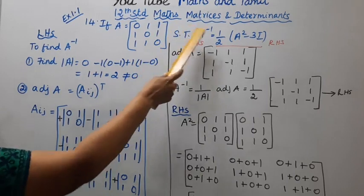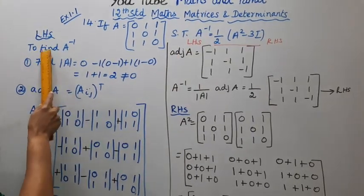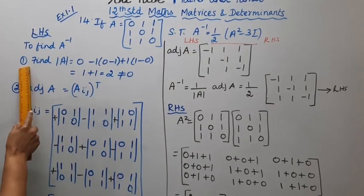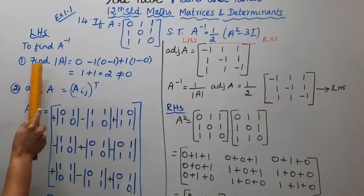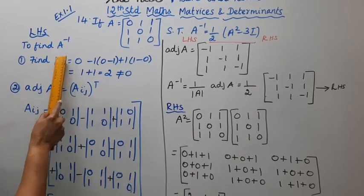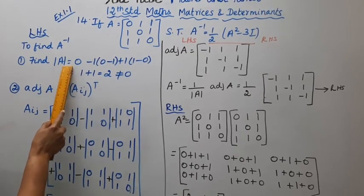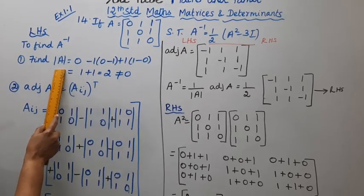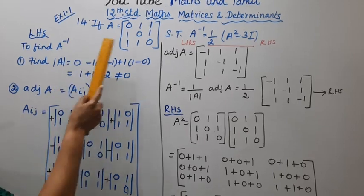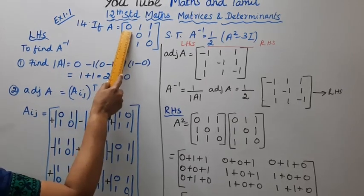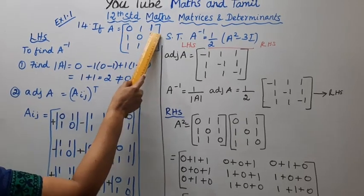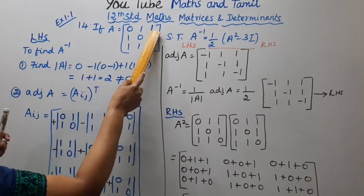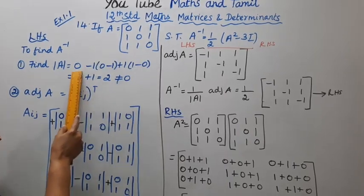First, to find the left hand side, we find A inverse. To find A inverse, first find the determinant of A. Determinant of A: expanding along the first row, first row is 0, 1, 1; and we expand using minors from rows 1, 0 and 0, 1.